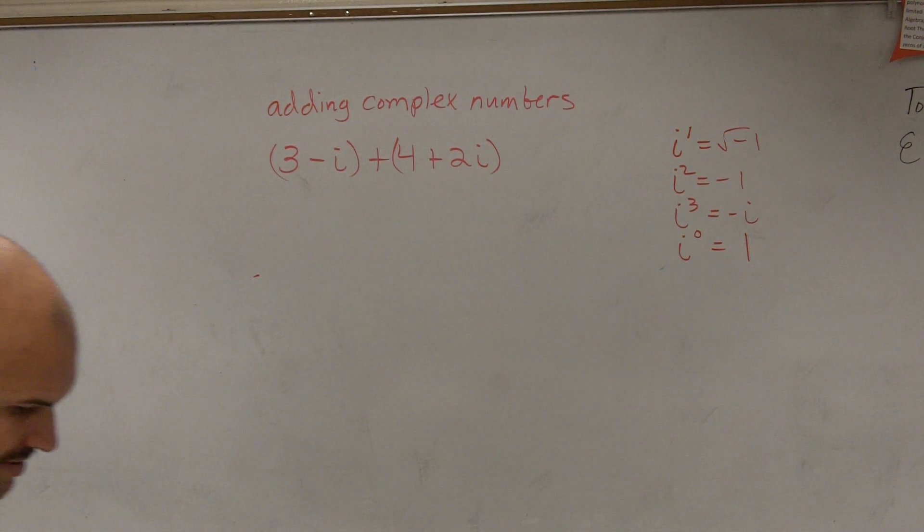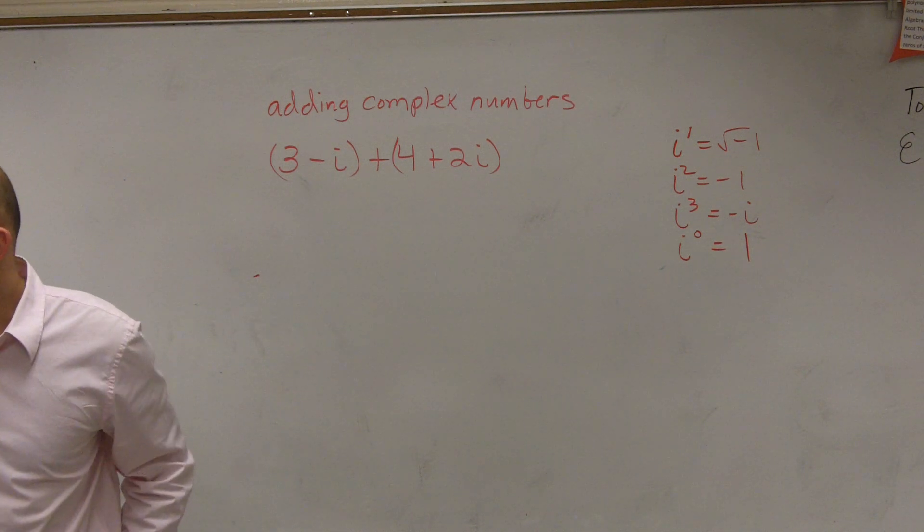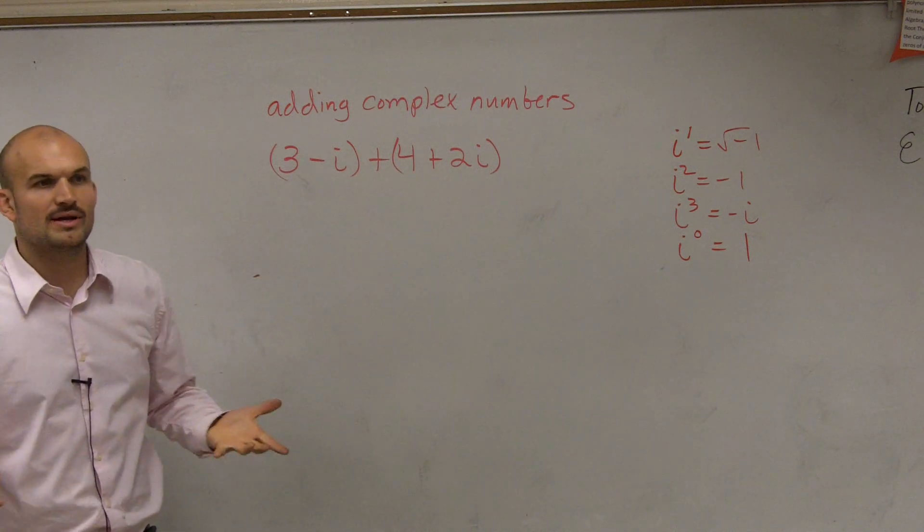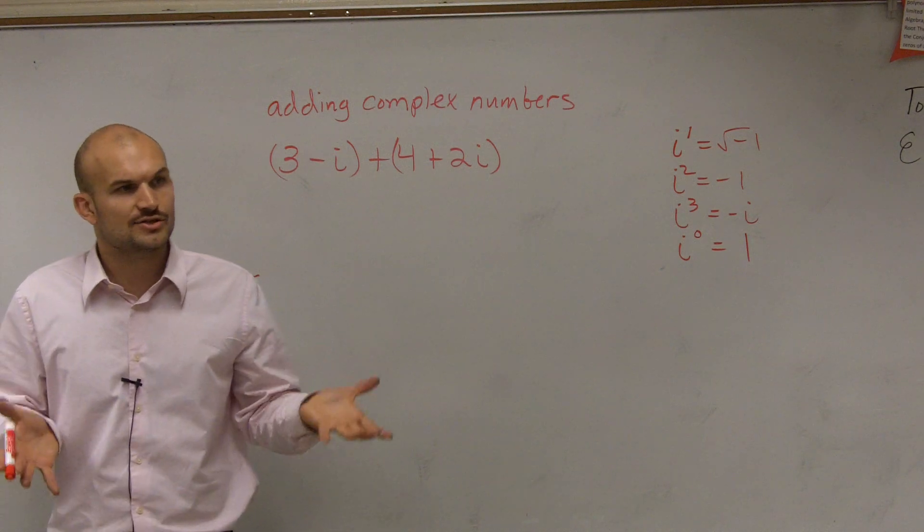It's the exact same thing. So when you're adding, subtracting, and multiplying, you're going to treat your i just like a variable. So how would I add these two complex numbers? Well, what we want to do is make sure we add the reals to the reals and the imaginary to the imaginary.